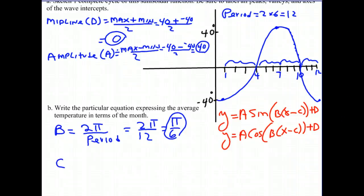Now we want to get our C, which will be different for sine or cosine. For the sine curve, we look for the point where the graph intersects the midline and is increasing, which is at 4. So C equals 4 for sine. For a cosine curve, we look for the maximum point where it's decreasing, which is at 7. So C equals 7 for cosine.